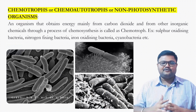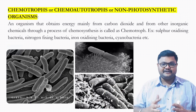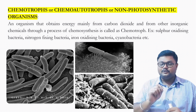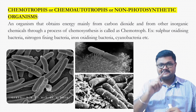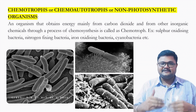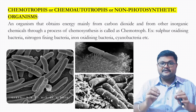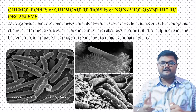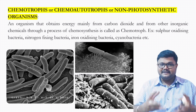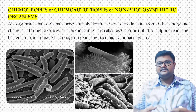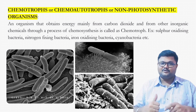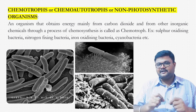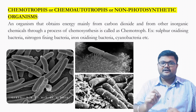The next topic is chemotrophs, chemoautotrophs, or non-photosynthetic organisms. The name itself indicates that these are autotrophs, but chemoautotrophs. Autotrophs typically utilize sunlight to convert things into food; however, chemoautotrophs do not use sunlight at all. Instead of sunlight, they use energy from chemical sources such as carbon sources and other derivatives. Since they use chemical energy to produce food, they are called chemotrophs. Since they work in the absence of sunlight, they are called non-photosynthetic organisms.